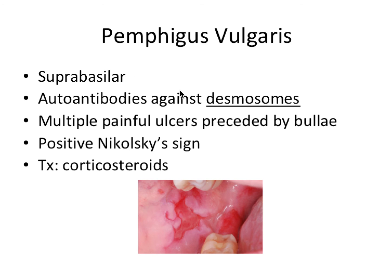Pemphigus vulgaris is suprabasilar and involves autoantibodies against desmosomes. It has multiple painful ulcers preceded by bullae — large fluid-filled vesicles that pop and leave painful ulcers. It also has a positive Nikolsky's sign, where slight rubbing of the skin or mucosa results in exfoliation of the outermost layer. In a dental setting, blowing air with the air-water syringe on oral mucosa could cause it to lift and shed. Treatment is with corticosteroids.